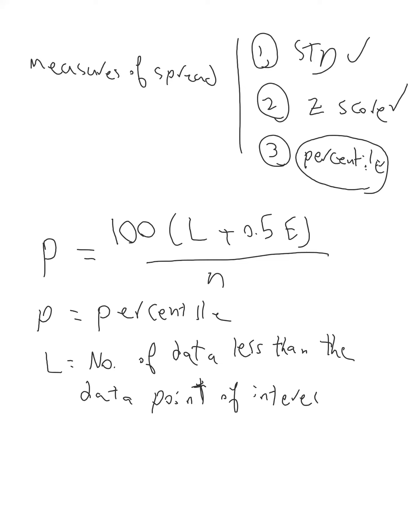E is the number of data equal to the data point of interest, and N is the size of the population.